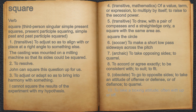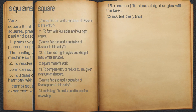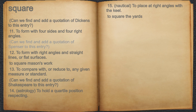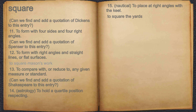39. To take a boxing attitude, often with up or off. 40. For example, can we find and add a quotation of Dickens to this entry? 41. To form with four sides and four right angles. For example, can we find and add a quotation of Spencer to this entry? 42. To form with right angles and straight lines, or flat surfaces. For example, two square masons work.